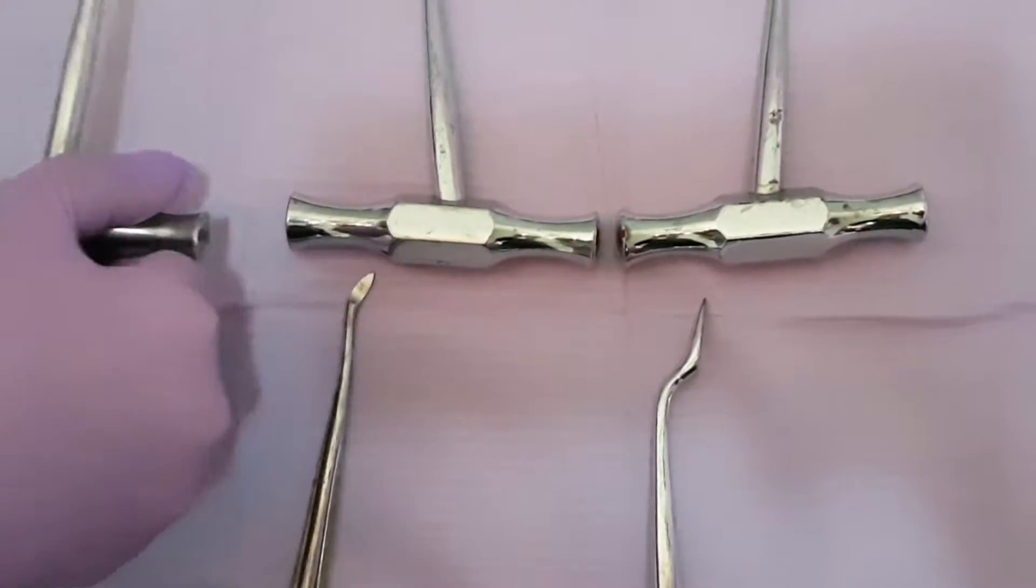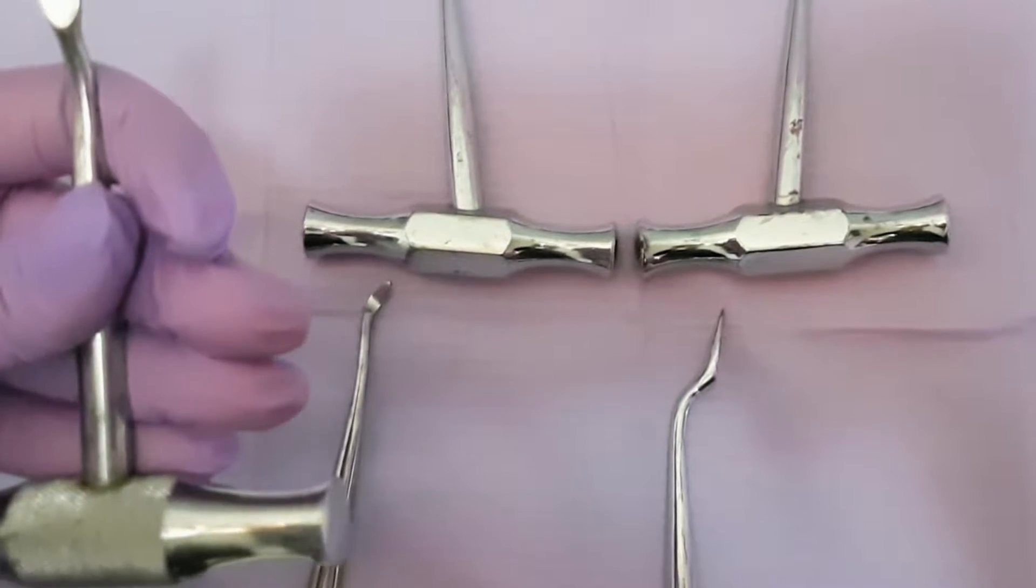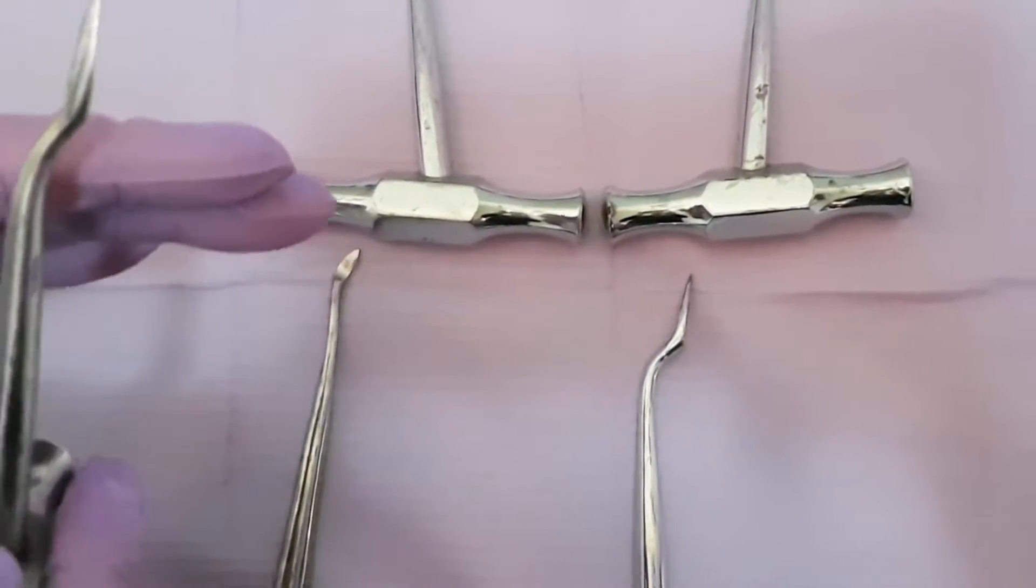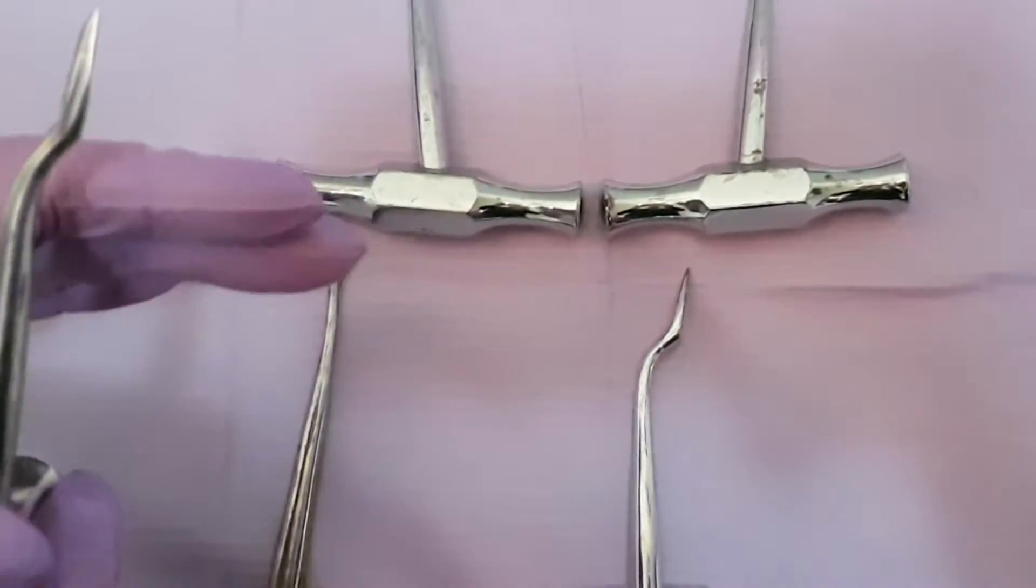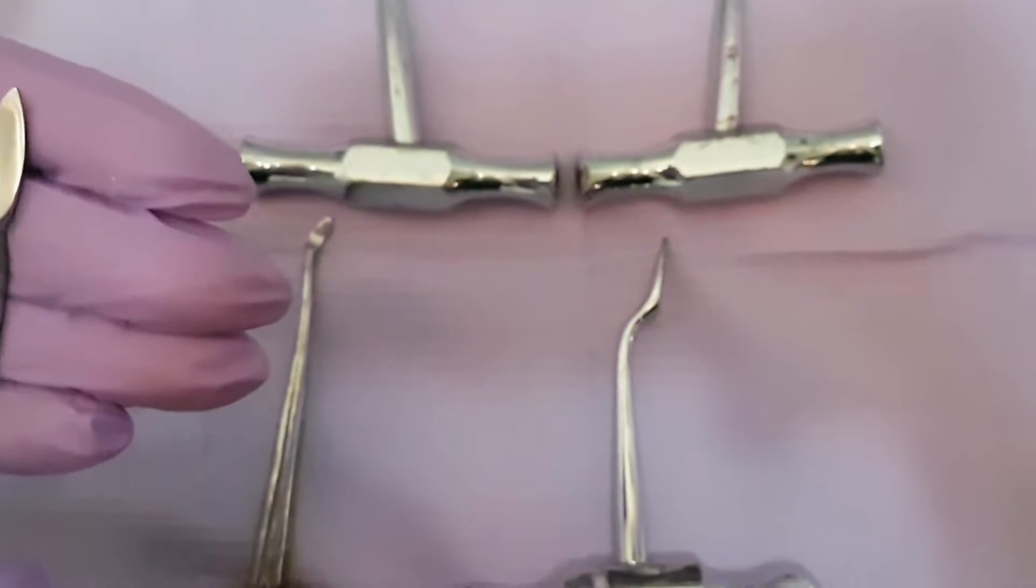First, we will start with describing a characteristic dental elevator that is only used to work in the lower jaw when we want to extract the third molar when the patient has all of his teeth.